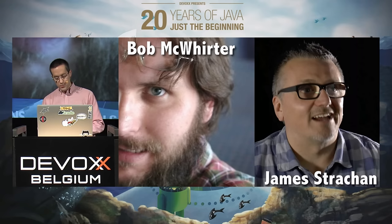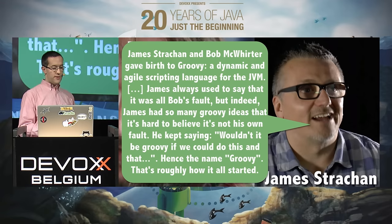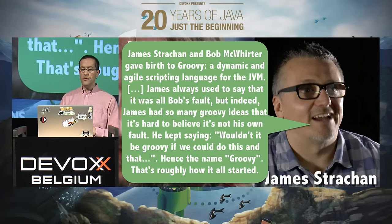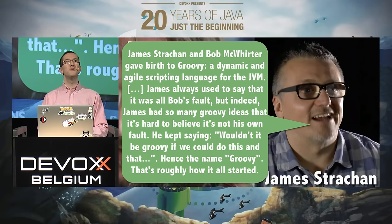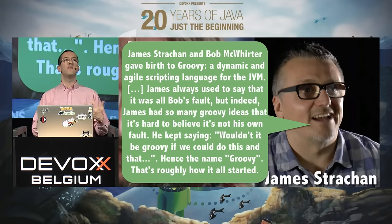It was made by Bob McWhirter and James Strachan. Bob McWhirter is quite well known for things like JBoss Drools, so it wasn't his first open source project. James Strachan is also known for ServiceMix, ActiveMQ, and some Apache Commons projects. Back in 2003, James was chatting with his friend Bob and saying, wouldn't it be Groovy if we could do this and that in Java? He was inspired by languages like Python, Smalltalk, and Ruby, and felt we could do something cool in Java. The idea came to create a brand new language that runs on the JVM.